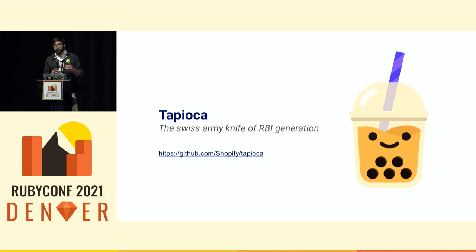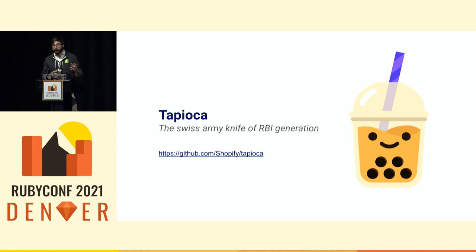A lot is happening at runtime — especially modules being created, methods being created — and we needed a way to teach Sorbet how to understand those things without running the application itself. So again, the solution was in Tapioca. We created a second version of Tapioca where Tapioca loads your application, finds everything that you use at runtime — for example, if you use Active Record, what types will exist, what methods will be defined — and again creates RBI files that Sorbet can use to type check your program and know that a method actually exists at runtime, even if there are no static artifacts about it in your code base.